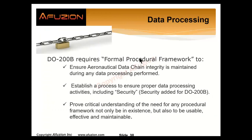What is that formal data process framework? It's a defined set of activities, processes, and instructions ensuring that aeronautical data chain integrity is maintained during any data processing performed. It defines a written process to ensure proper activities, including security. Security was added for DO-200B, though 200B was written before the cybersecurity guidelines of DO-326 and DO-355.